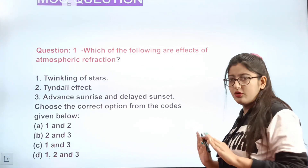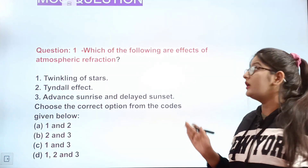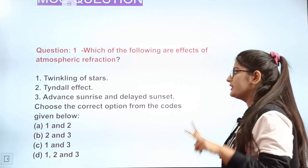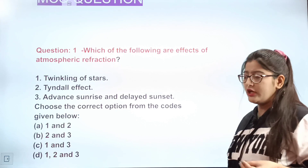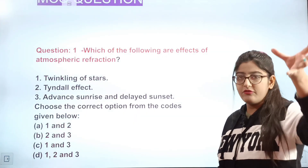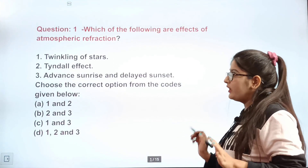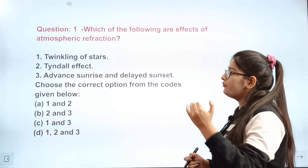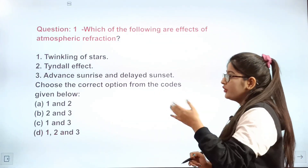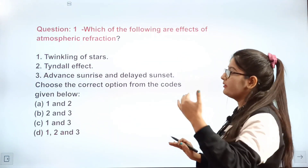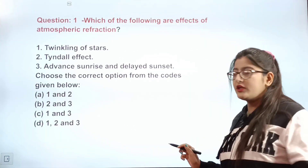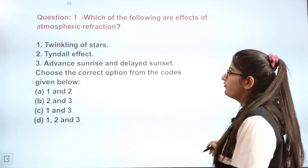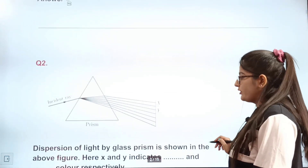Question 1: Which of the following are effects of atmospheric refraction? The three effects given are: (1) twinkling of stars, (2) Tyndall effect, and (3) advanced sunrise and delayed sunset. The correct answer is C — twinkling of stars and advanced sunrise and delayed sunset are examples of atmospheric refraction.